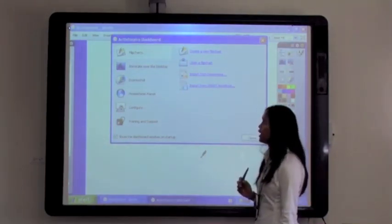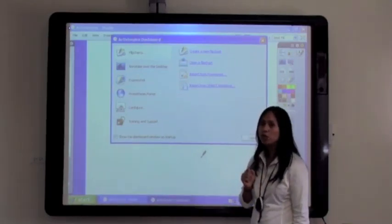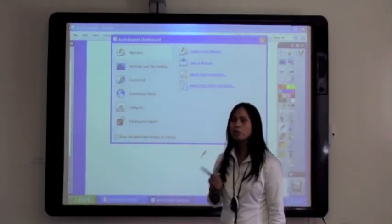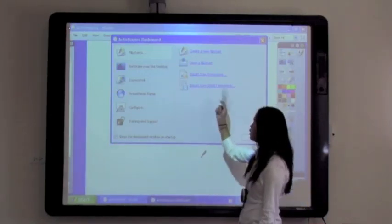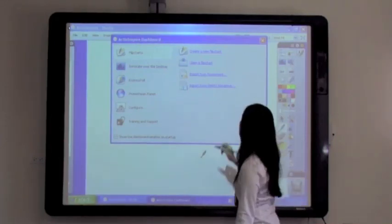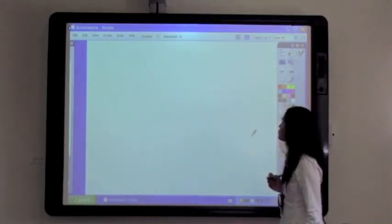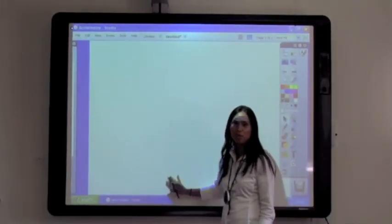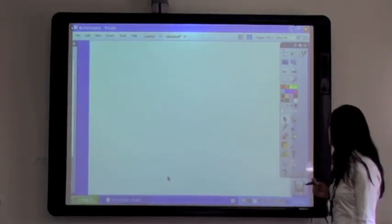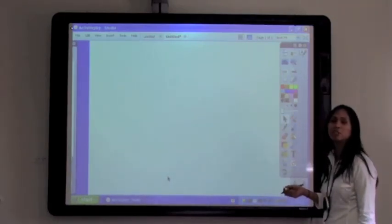The first screen that I get is called the dashboard. The dashboard gives me options as to whether I want to create a new flip chart, open an existing one, or if I've already created lessons using PowerPoint, I can easily use their import from PowerPoint feature. I'm going to create a new flip chart and close the dashboard. What we have here now is our flip chart page. To the right, you'll see our main toolbar, which gives us access to various tools. We'll explore some of the basic tools that will help you get started using ActiveInspire.